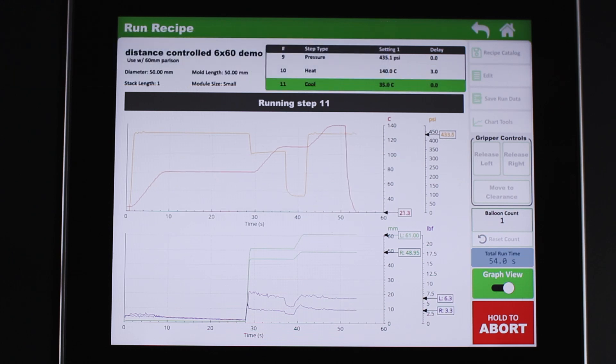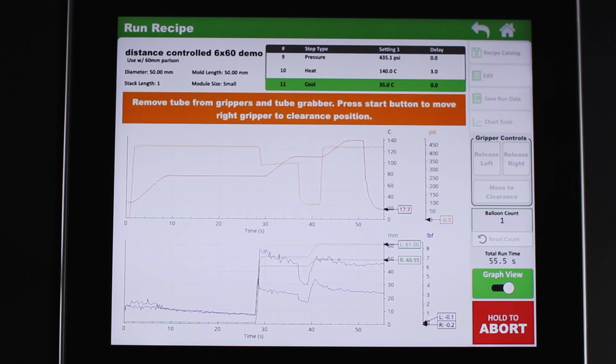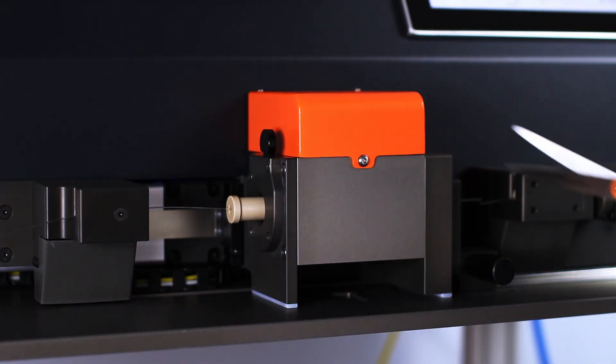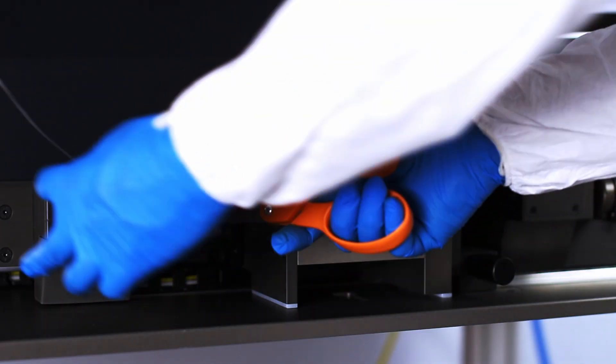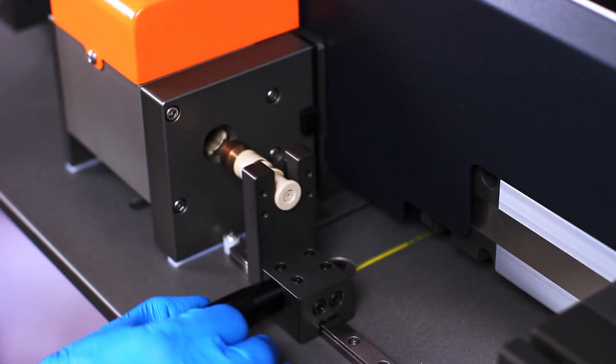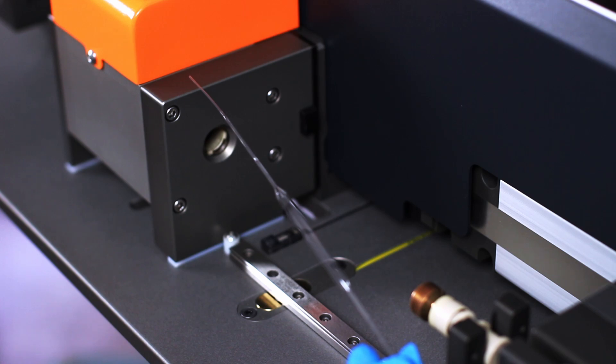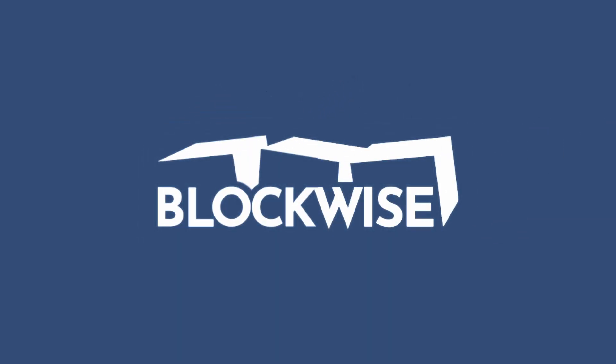Once the recipe cycle is complete, the balloon can be removed by following the instructions displayed on the screen. Cut the tubing on both sides of the module, then push the start button to move the right gripper to the clearance position. Finally, pull the end plug carrier away from the module and remove the balloon from the mold.